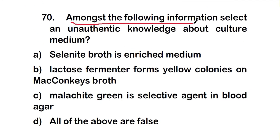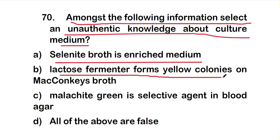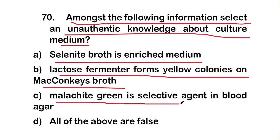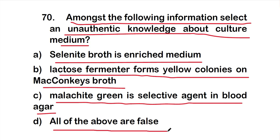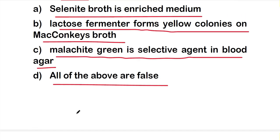Question number 70: Select an unauthentic statement about culture medium. Options are: A) selenite broth is an enriched medium, B) lactose fermentation forms yellow colonies on MacConkey's agar, C) malachite green is selective agent in blood agar, D) all of the above are false. The right answer is option D — all of the above statements are false.